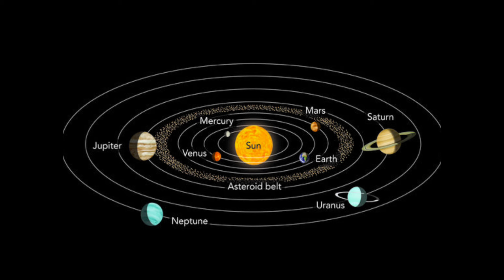The oval-shaped lines visible in the figure represent the path of each planet. This path is known as the planet's orbit.